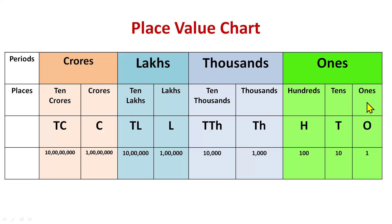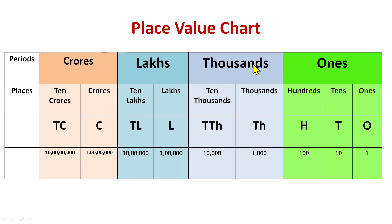In math we call these houses 'periods.' So we have four periods: ones period, thousands period, lakhs period, and crores period. The members within each period are called 'places.' In the ones period we have ones, tens, and hundreds place. In the thousands period: thousands and ten thousands place. In the lakhs period: lakhs and ten lakhs. In the crores period: crores and ten crores.